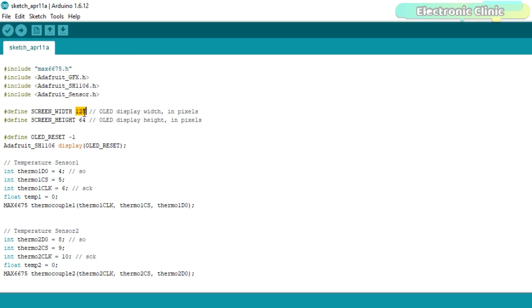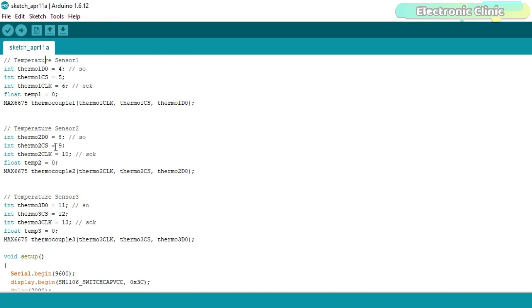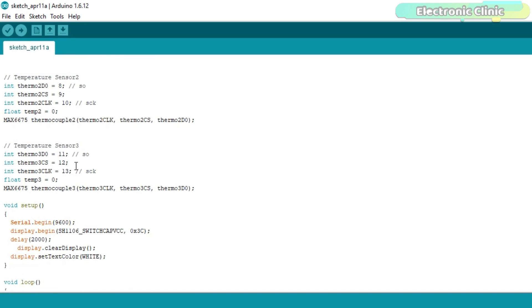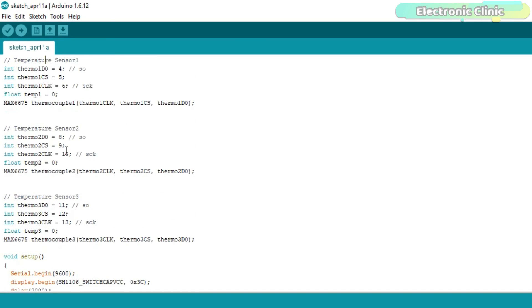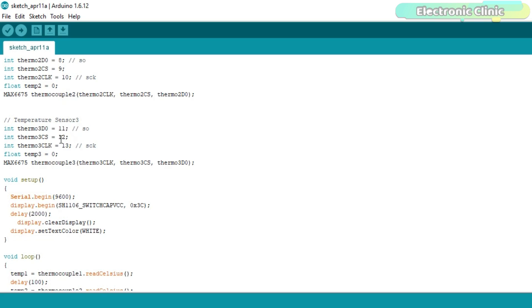128 is the screen width of the OLED display in pixels while 64 is the height. The type of OLED display I am using has no reset pin, so that's why I assigned a value of minus 1. Then I defined pins for all the three MAX6675 temperature sensor boards. I have already explained the pin connections in the circuit diagram. There is only one thing that you need to take care of: Never use the same pins.